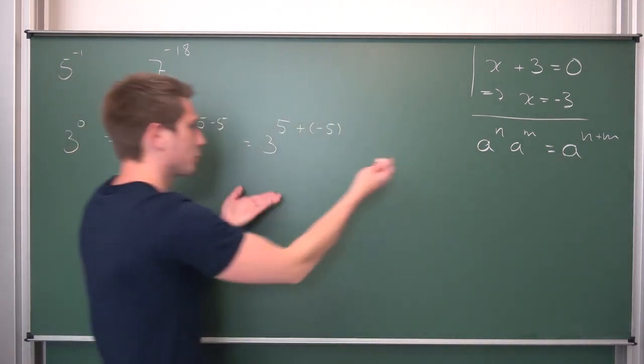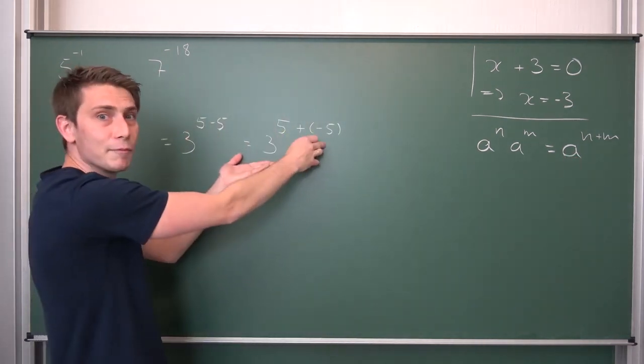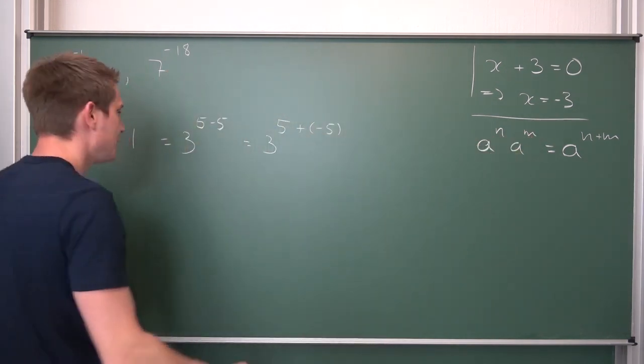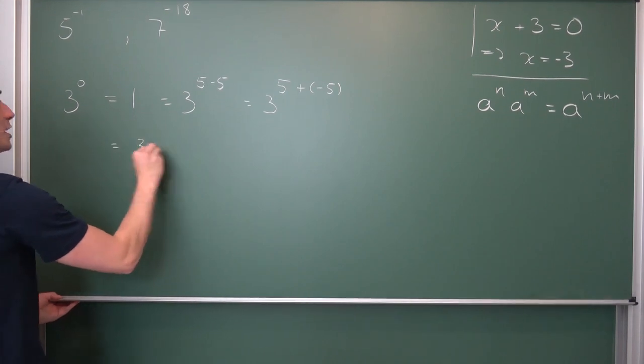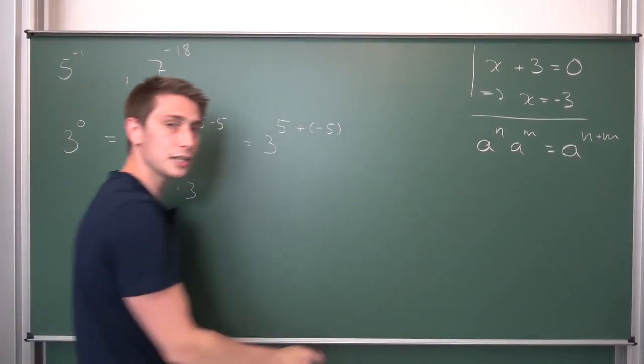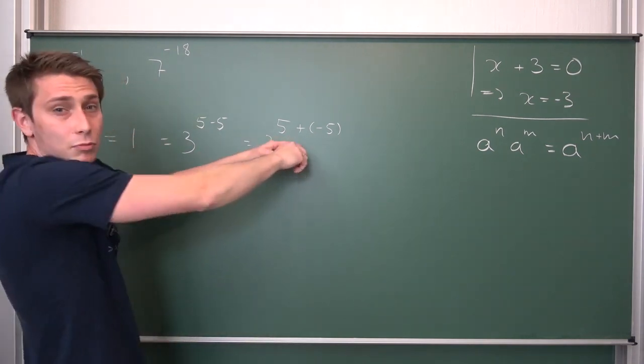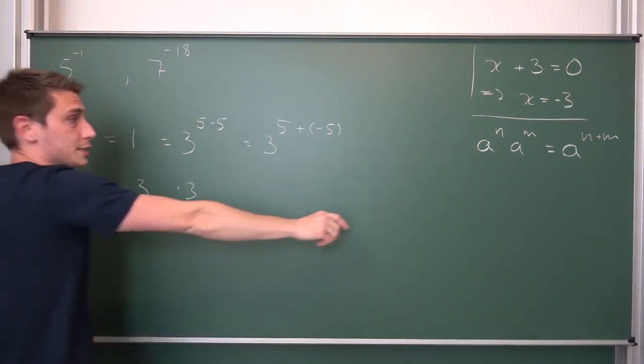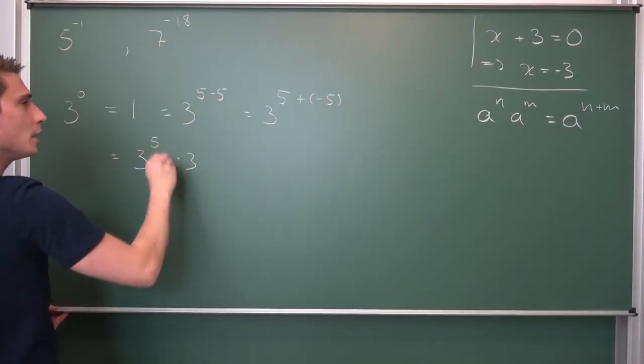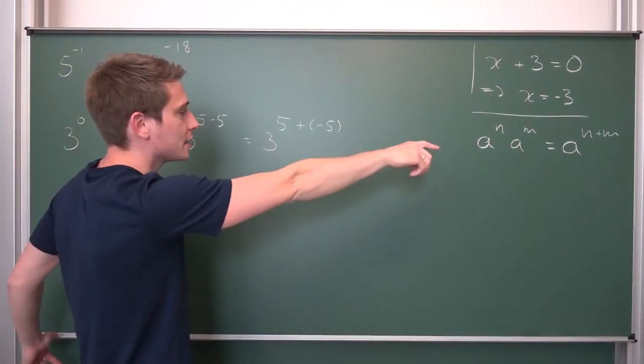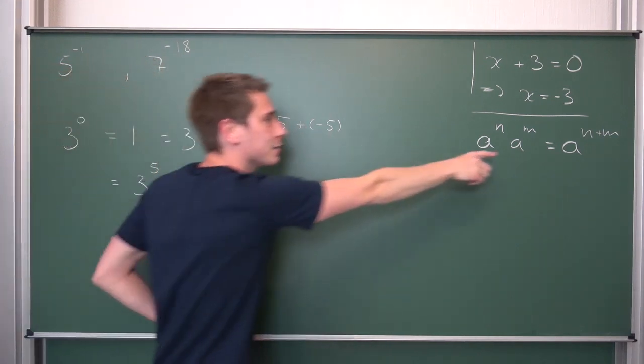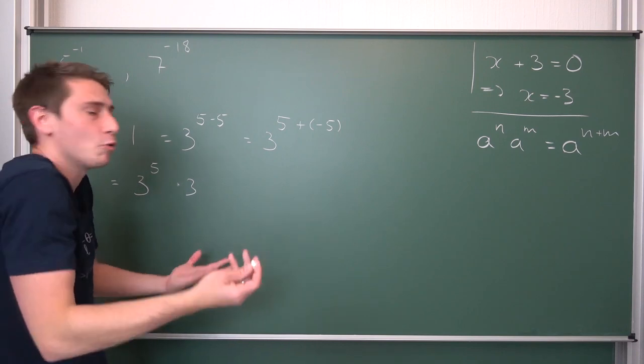We have something of the form a to the n plus mth power. Now we just need to identify what n and m actually are. Identify our base. Our common base is 3 and then we are basically done. What is our n exactly? Our n in this case is nothing but, well, 5. All right, obviously it's the left hand thing. It's 5 here. That's kind of obvious. What is our m exactly? Well, m is the thing behind the plus sign. It's negative 5 here. Just compare coefficients basically.